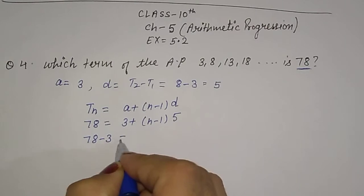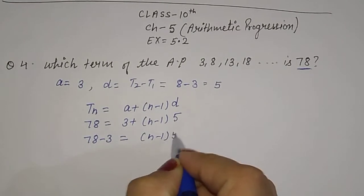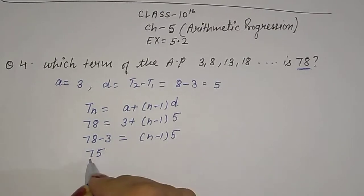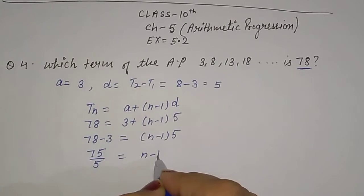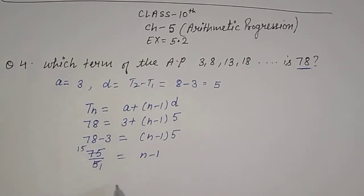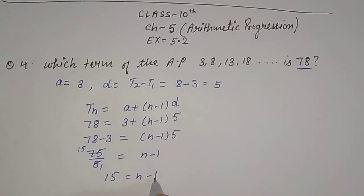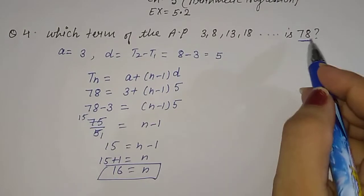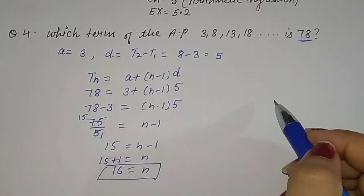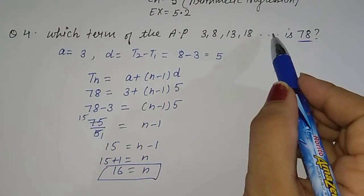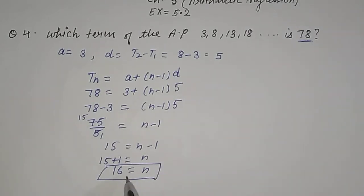Solving: 78 minus 3 is equal to (N minus 1) into 5. That gives 75 = (N minus 1) into 5. Dividing both sides by 5: 75 ÷ 5 = 15 = N minus 1. So N = 15 + 1 = 16. It means 78 is at the 16th place — the 16th term of the AP is 78.